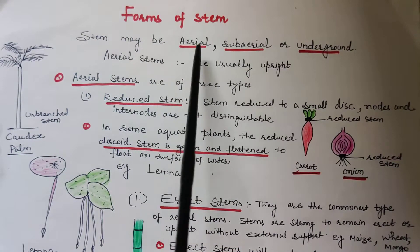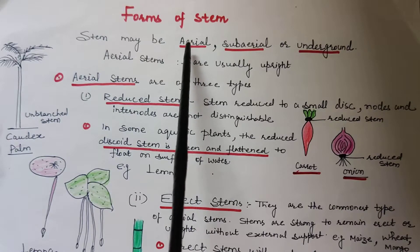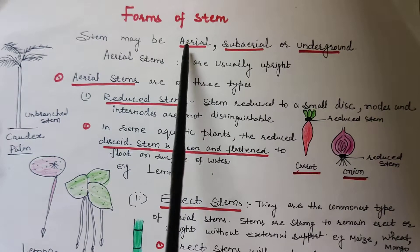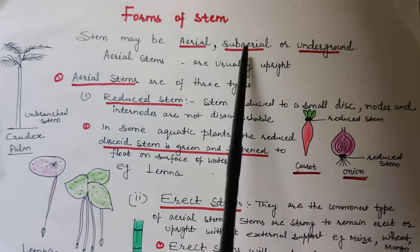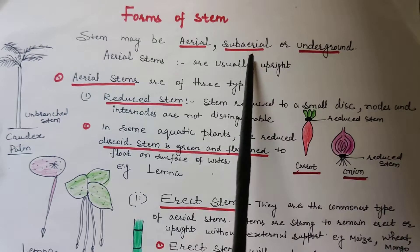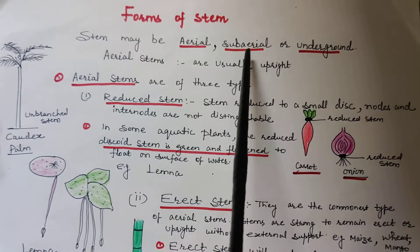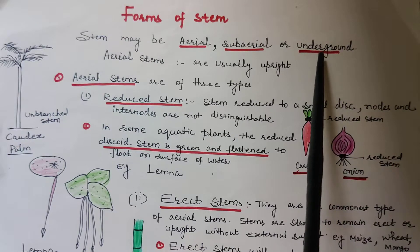Now, forms of stem. Stem may be aerial — it usually grows upright, towards the upward direction. It may be subaerial, meaning a part of the stem may be buried beneath the soil and a part is above the ground, hence the name subaerial. Or underground, meaning the stem which grows under the soil.